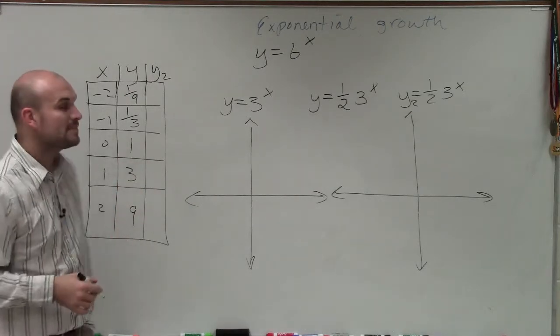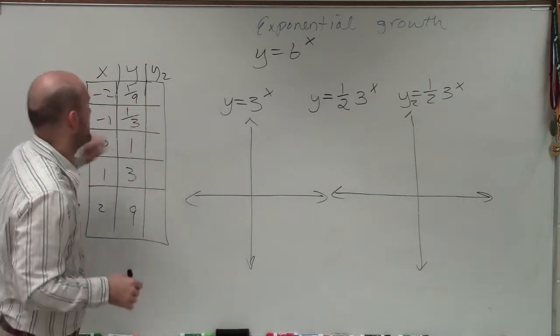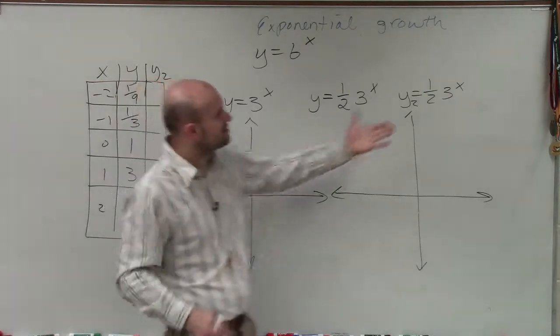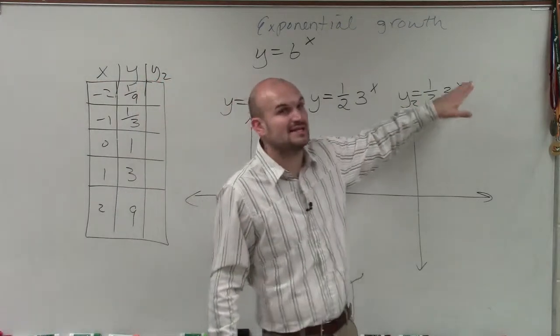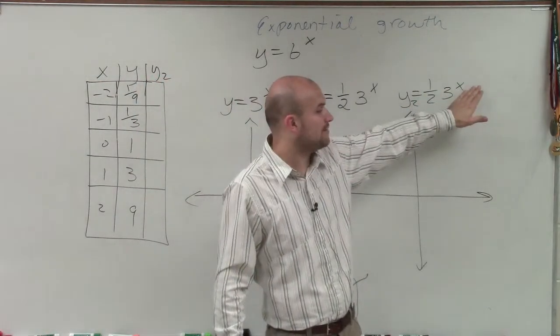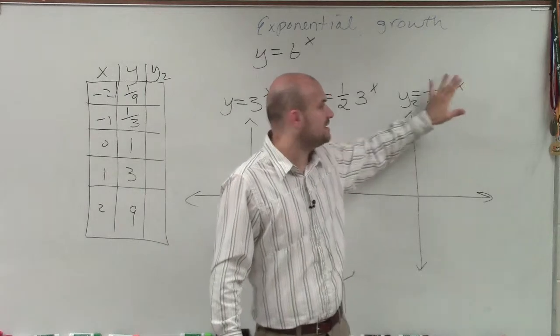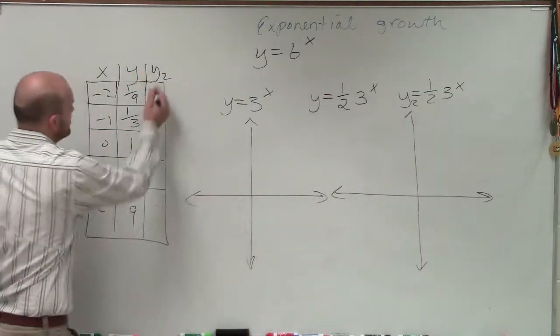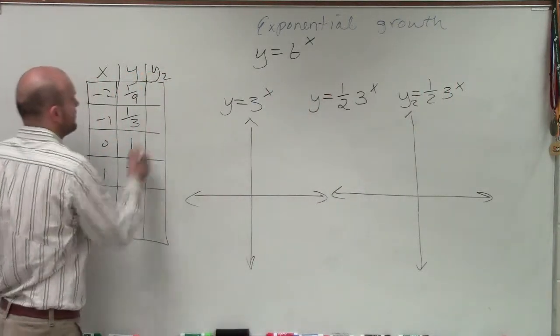Now, if I multiply each one of these by one half — because that's essentially what I'm doing — you always take your base, raise it to your power, and then multiply by one half. So if I multiply each of those y-values by one half, I get the second set of values.